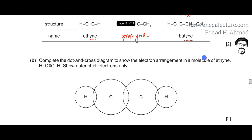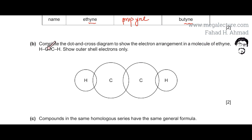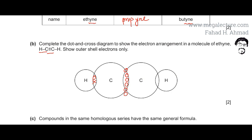Moving to the next part, we're asked to complete the dot and cross diagram showing the electron arrangement in a molecule of ethyne. They've already given us the structural formula. I need to draw showing outer shell electrons only. Starting with the C-H single bond — one electron is being shared. Then there's a triple bond between the two carbon atoms, meaning three pairs of electrons being shared — six electrons total, three shared by each carbon atom. Then another single bond between carbon and hydrogen, one electron shared each. That completes the molecule of ethyne.